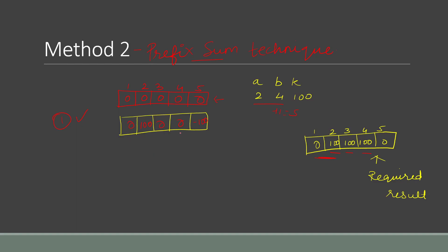Now comes the prefix sum technique. For any index i, its prefix sum is the sum of all elements to its left. For index 3, the prefix sum is the sum of elements from index 1 to 2. For index 4, it is the sum from index 1 to 3. To get the new value at any index, we add the prefix sum for that index with the current value at that index.